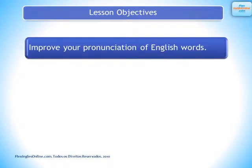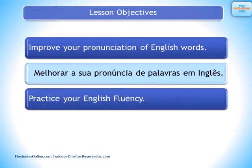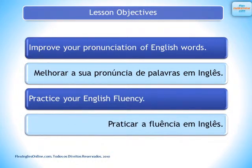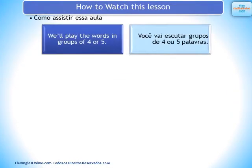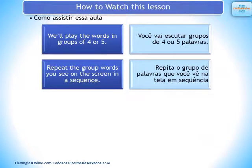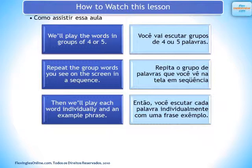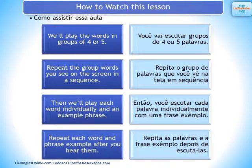Lesson Objectives: Improve your pronunciation of English words. Practice your English fluency. How should you watch this lesson? We'll play the words in groups of four or five. Repeat the group words you see on the screen in a sequence. Then we'll play each word individually and an example phrase. Lastly, repeat each word and phrase example after you hear them.